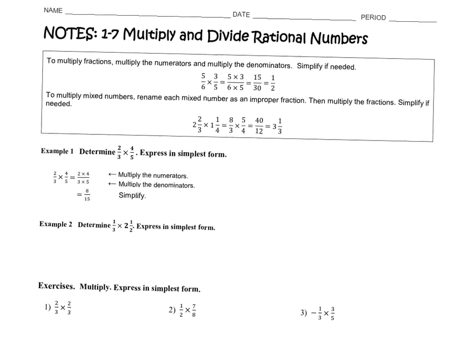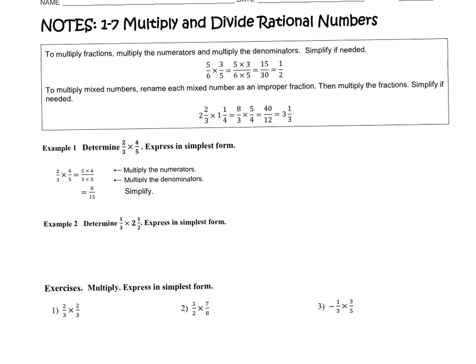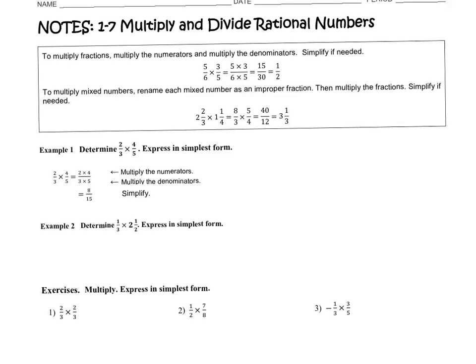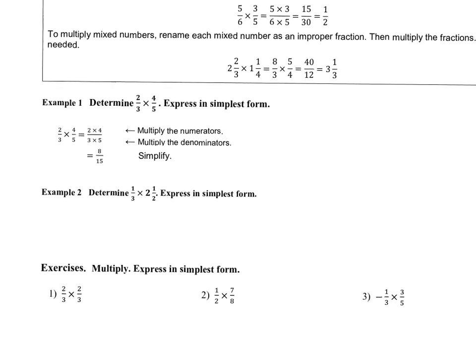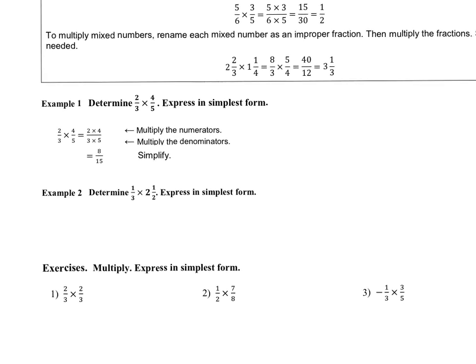To multiply mixed numbers, so mixed numbers is what we were working on yesterday. Rename each mixed number as an improper fraction, then multiply the fractions, simplify if needed. That's just the quick version. So we're going to do some examples right here. I don't love that it's already done for you, so I'm going to do it out to the side. So I want you to write it out to the side also.